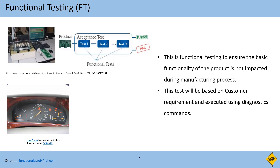Functional testing: this method verifies the basic functionality of the product manufacturing process. For example, in instrument panel cluster manufacturing, the verification of LED malfunction telltale functionality is done by simulating CAN inputs to ensure the hardware circuits — like power supply, CAN, microcontroller, and LED output — are working correctly. This test is majorly based on customer requirements or acceptance criteria and will be executed using diagnostic commands.